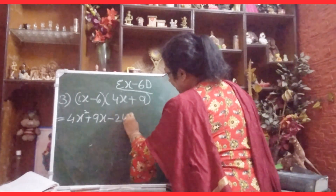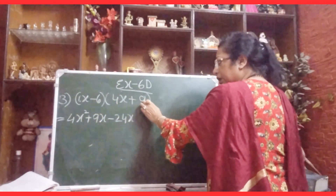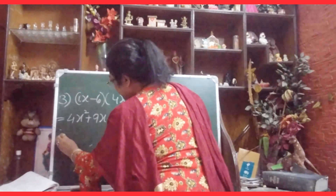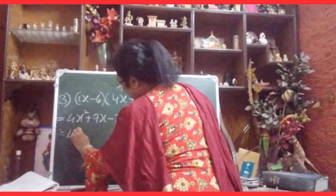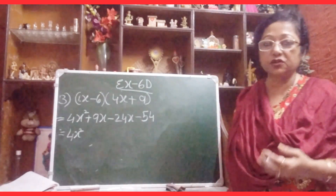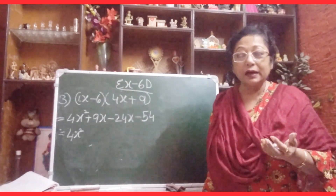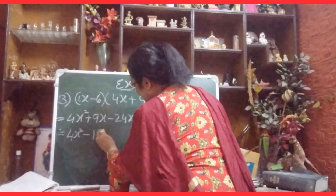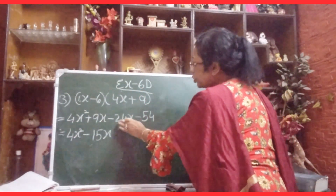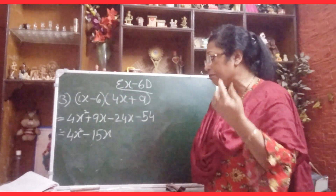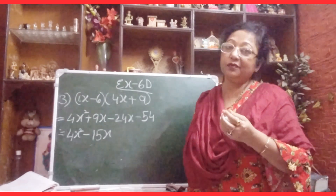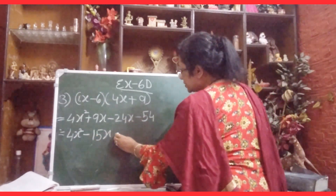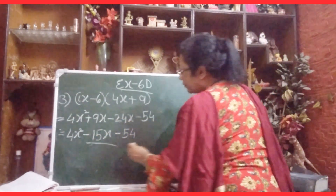Multiplying: x times 4x gives 4x squared. Then x times 9 gives plus 9x. Minus 6 times 4x gives minus 24x. And minus 6 times 9 gives minus 54. Combining 9x minus 24x: since 24 is bigger, we write minus 15x. So the answer is 4x squared minus 15x minus 54.